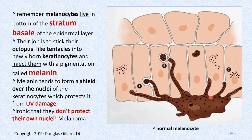What's the irony? The melanocyte is so busy injecting other cells, it forgets to inject itself. So the nucleus of a melanocyte is not shielded, and UV radiation can damage its nucleus and the chromosomes, causing them to mutate, grow rapidly — they become immortal — and now you've got yourself malignant melanoma.